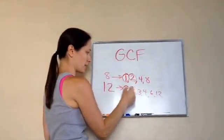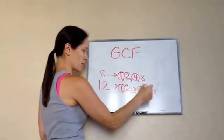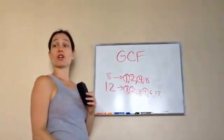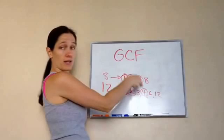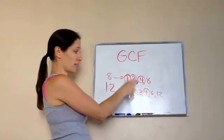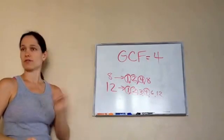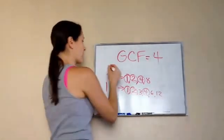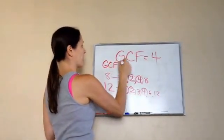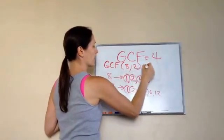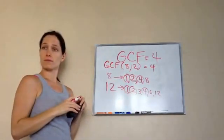1 is, 2 is, 4 is, that's it. So the greatest common factor is 4. We would say the GCF is 4 for 8 and 12. Okay, so the way they would write that down is GCF for 8 and 12 equals 4. That's how you would write that.